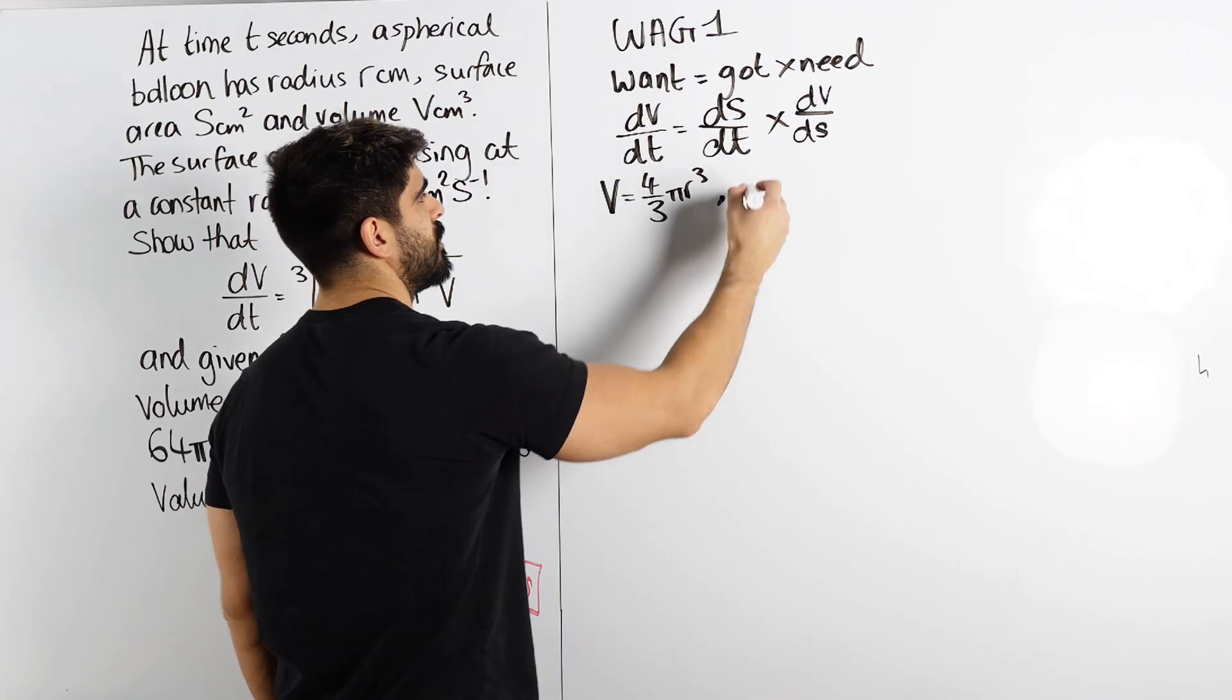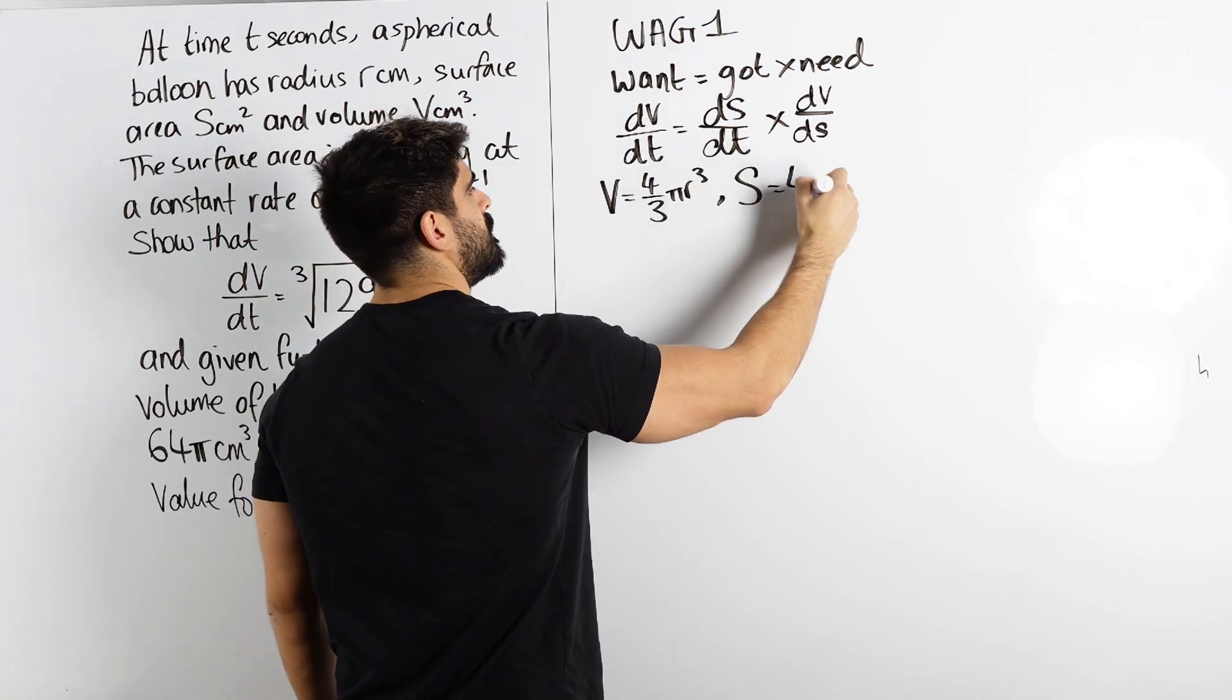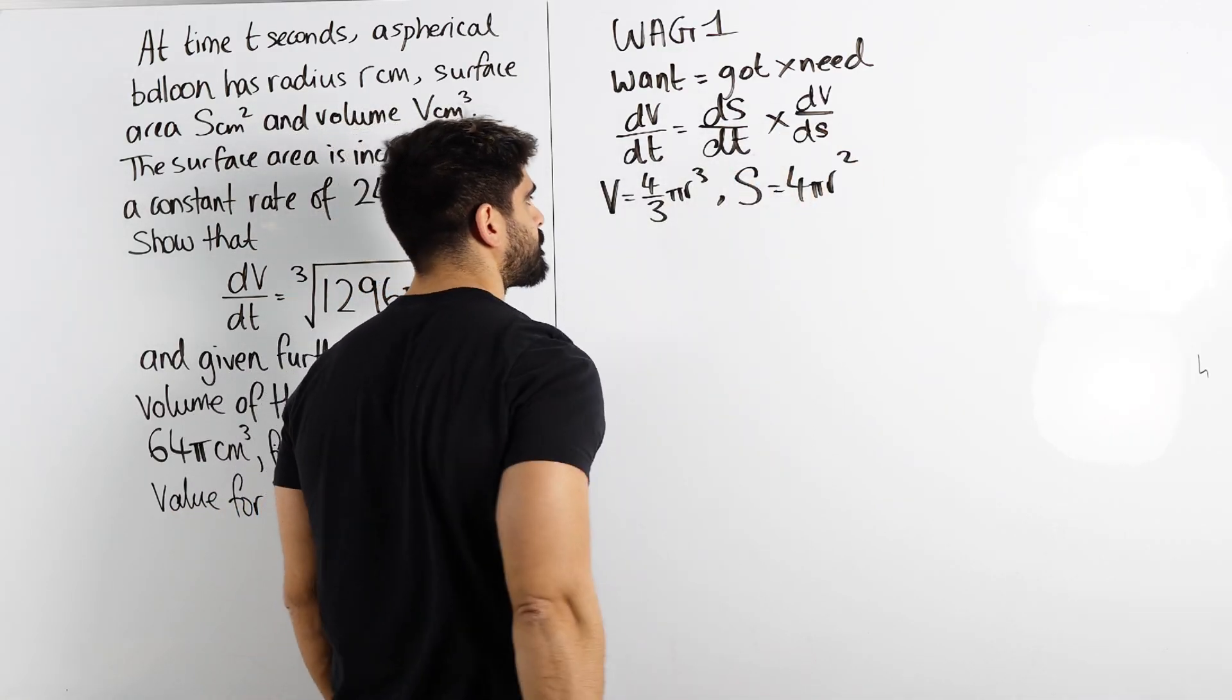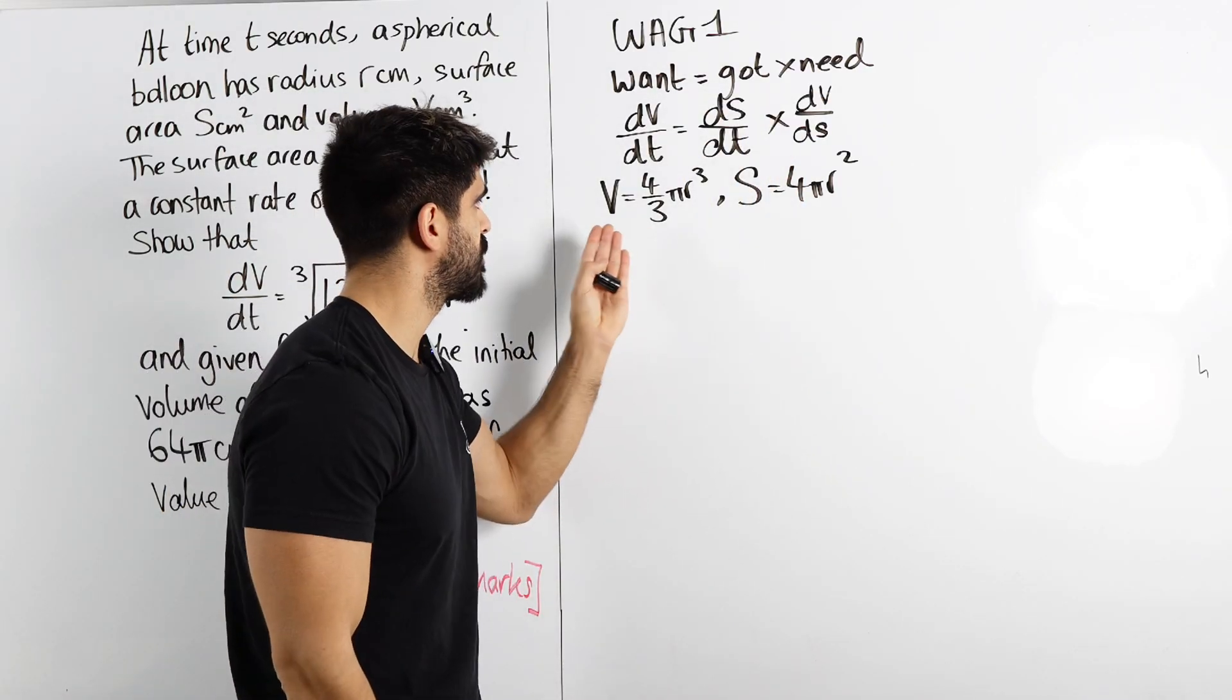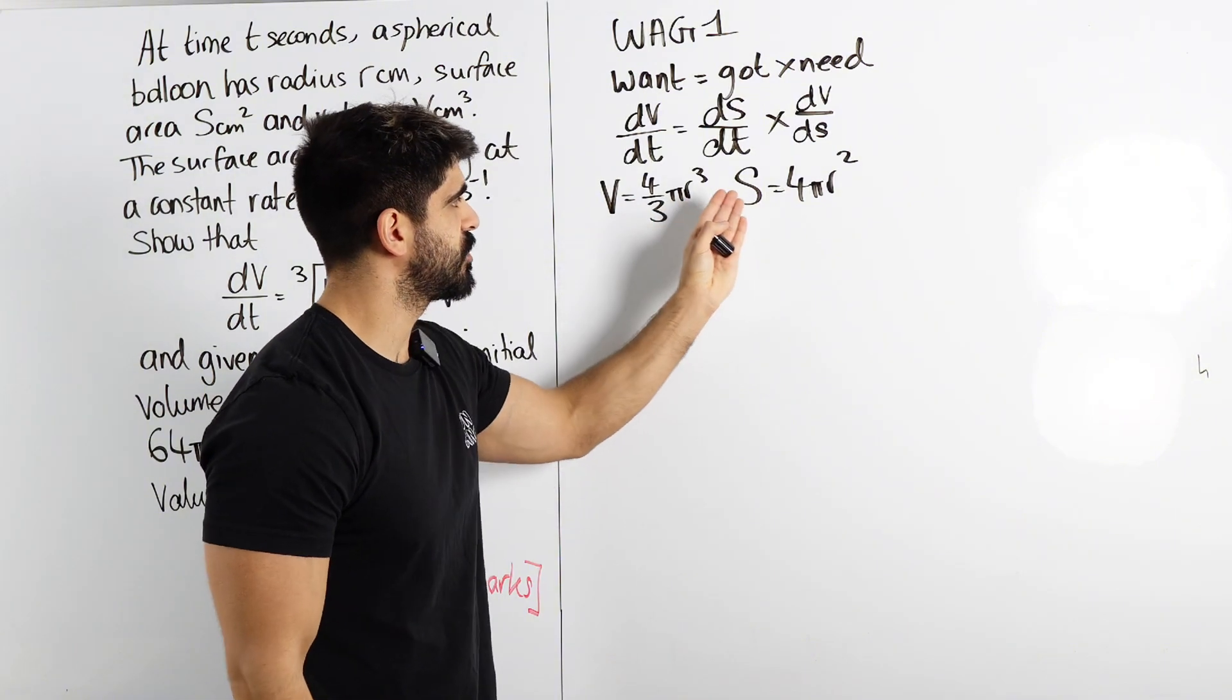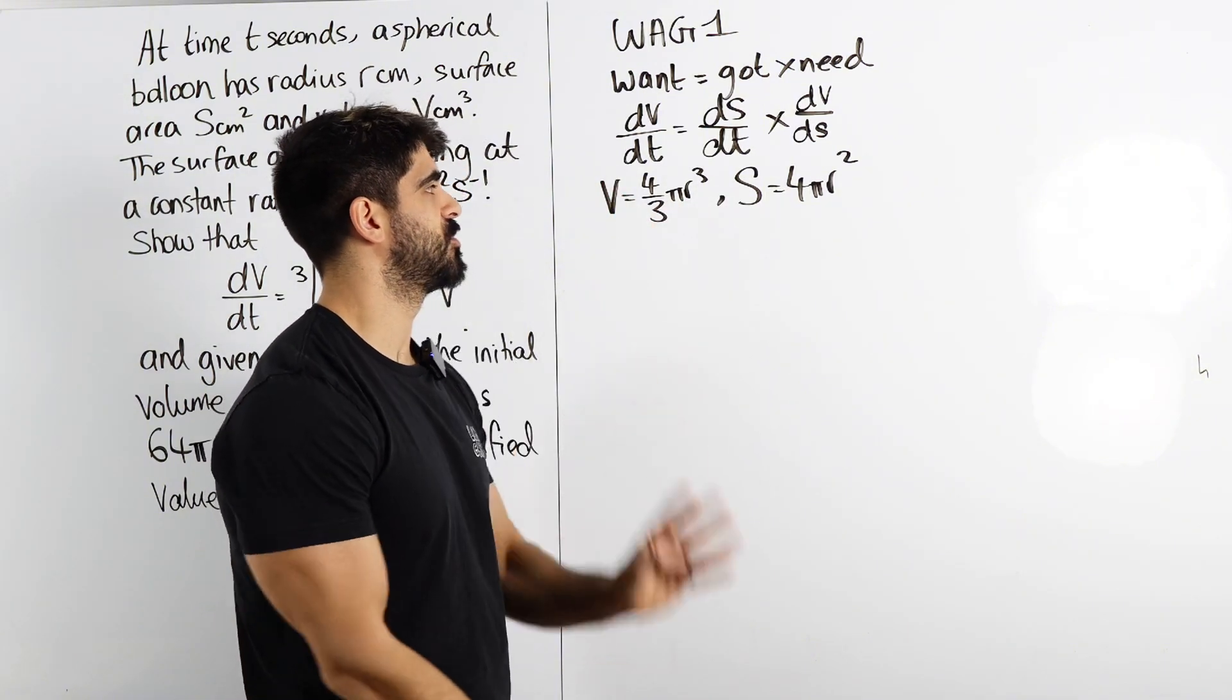you can very easily remember the surface area formula because you just differentiate this with respect to r. So when you differentiate this, you bring down the 3, you're left with 4, and then you knock one off the power. Now, we want dv ds. This is giving me parametric equations vibes. You differentiate this with respect to r, you differentiate this with respect to r, and then you just divide them.